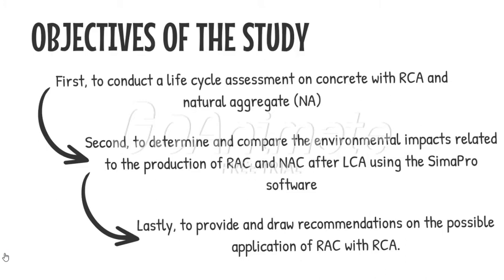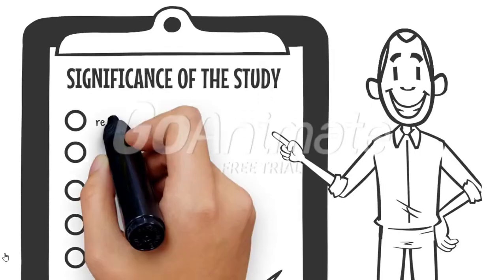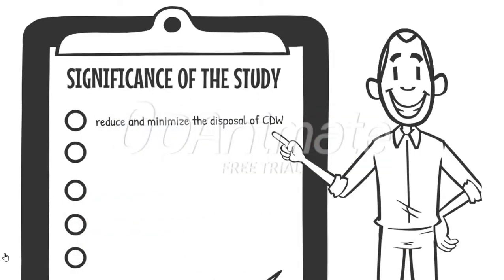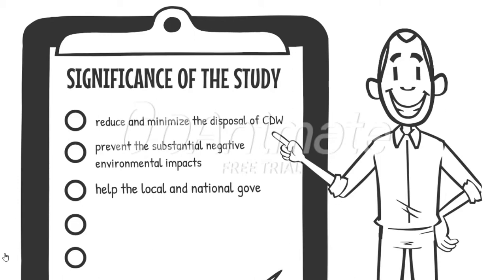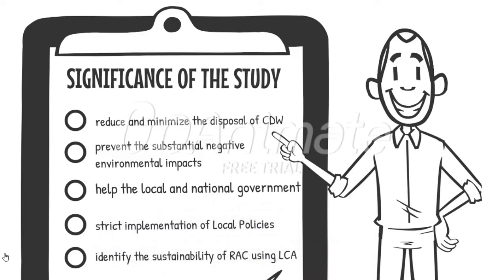Specifically, the study will seek to establish the feasibility of using RCA. The use of RCA will help to reduce and minimize the disposal of CDW in the construction sector. It will prevent substantial negative environmental impacts like global warming due to CO2 emissions. The study will also help the local and national government in maintaining a sustainable and safe environment, and will aid in the strict implementation of local policies to further identify the sustainability of REC using LCA.